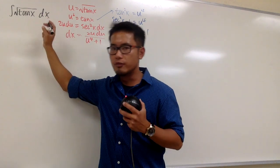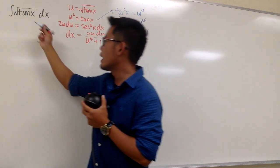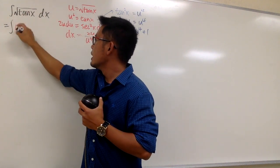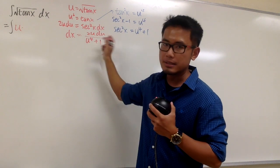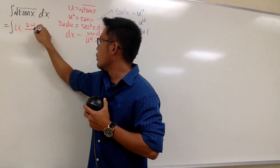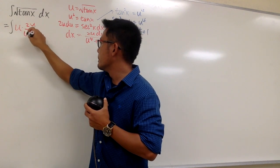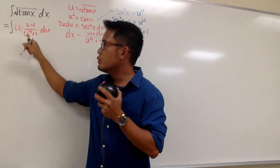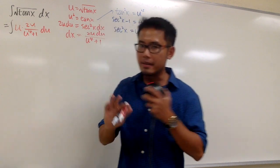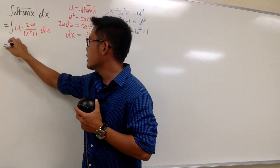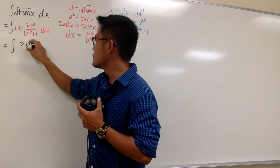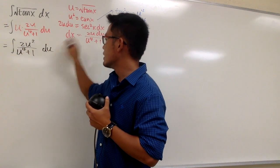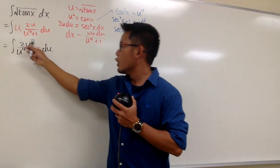Now we are ready to take this integral from the x world to the u world. The square root of tangent x is just u, and we multiply by dx, which equals 2u du / (u⁴ + 1). Combining u times u gives us the integral of 2u² / (u⁴ + 1) du. We have a rational function inside.